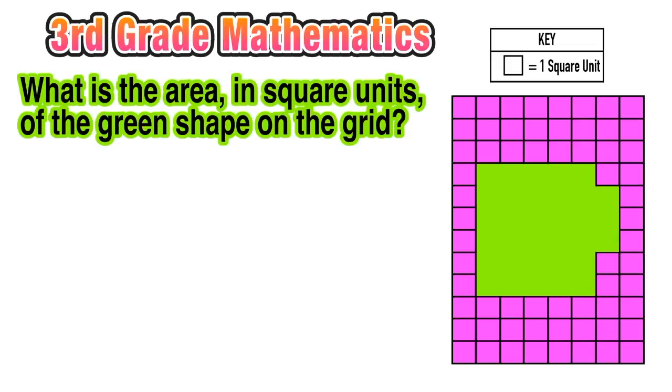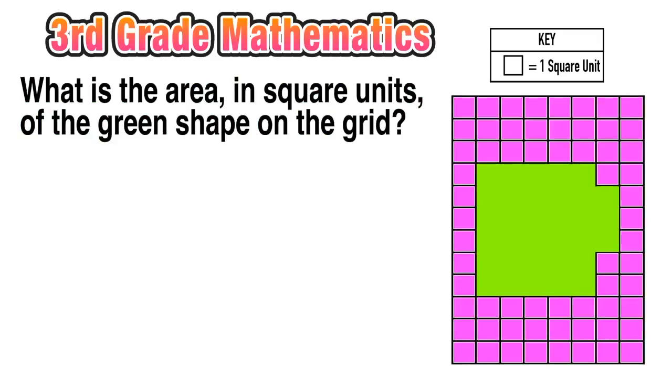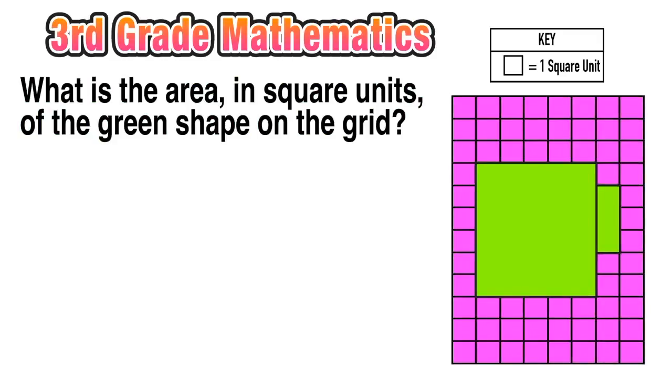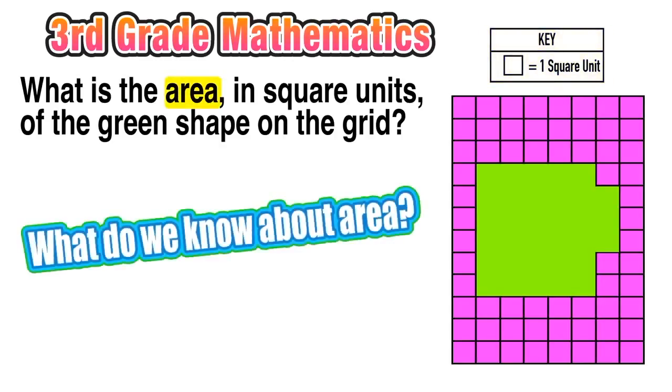Now some questions don't give us a diagram and we have to create our own. Other questions give us a diagram we have to use it to answer questions, and this is one of those kinds of problems. So here we want to know what is the area in square units of the green shape on the grid. So we have that big pink grid broken down into all those little equal size squares, and in the middle we have that green region.